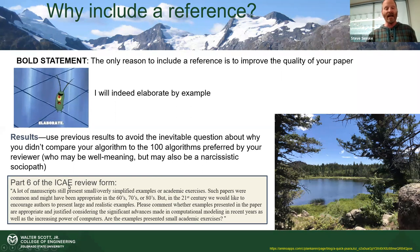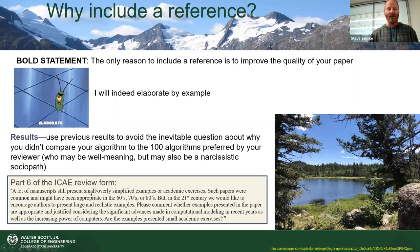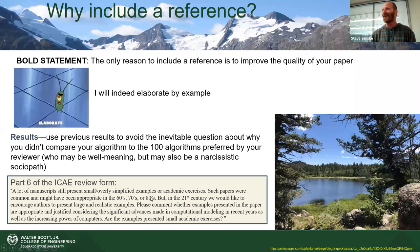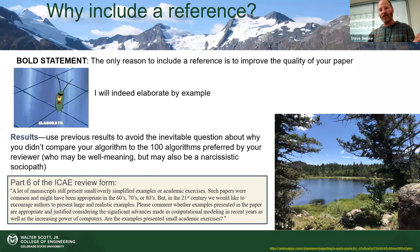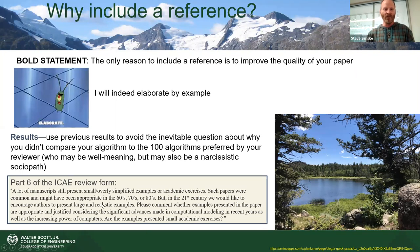Here's a good example from the ICAE journal, where I've been an associate editor for quite a long time. Their guidance states manuscripts still present small or overly simplified examples or academic exercises — such papers were common and might have been appropriate in the 60s, 70s, or 80s. As reviewers for that journal, we look to see if the quality of the data coming in is there. If it's just an academic exercise, they don't want that in the journal.